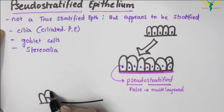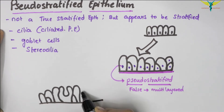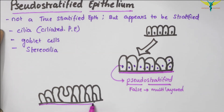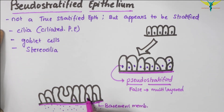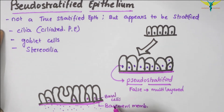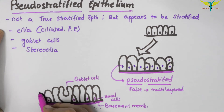Here are the tall cells and the goblet cell. This is the basement membrane with the lamina propria below, and these are the basal cells. This is the goblet cell and the cilia on top.